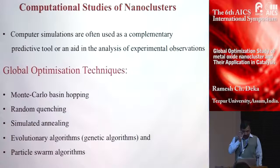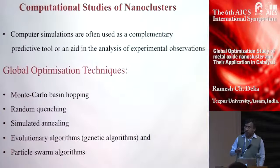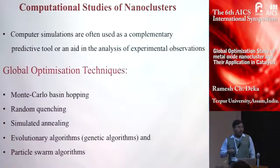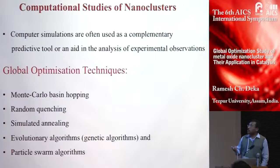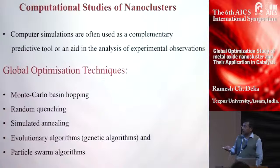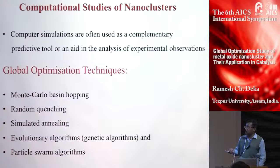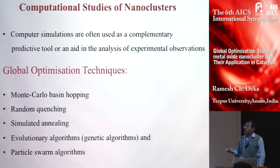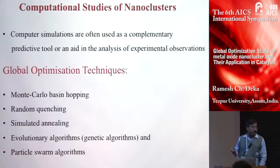In computational techniques, you are all aware of the problem of global minima — how to find the most minimum energy structure. Using conventional methods we always end up with local minima. For global optimization, we used one program developed at University College London. That program has several algorithms: Monte Carlo Basin-Hopping, random quenching, simulated annealing, genetic algorithm, and particle swap algorithm. For the calculations presented today, we used the genetic algorithm for obtaining the global minimum.